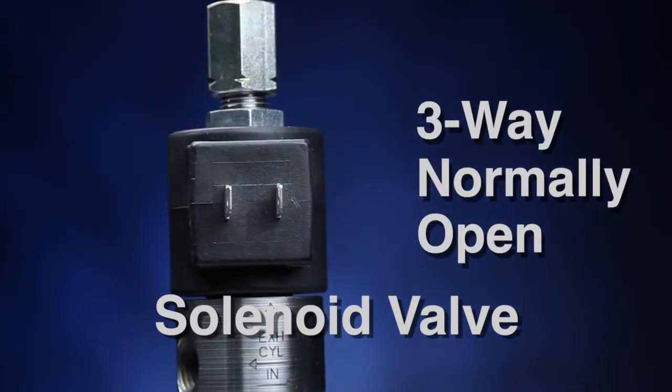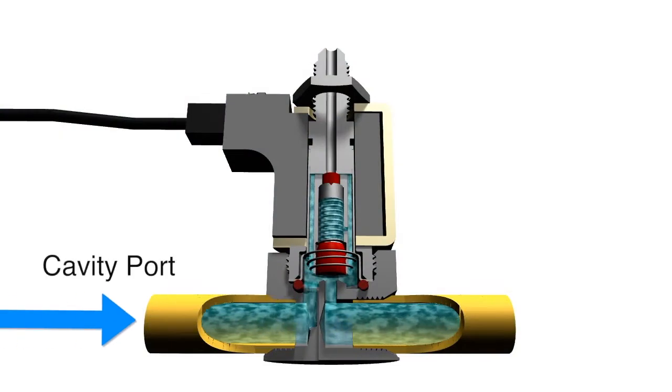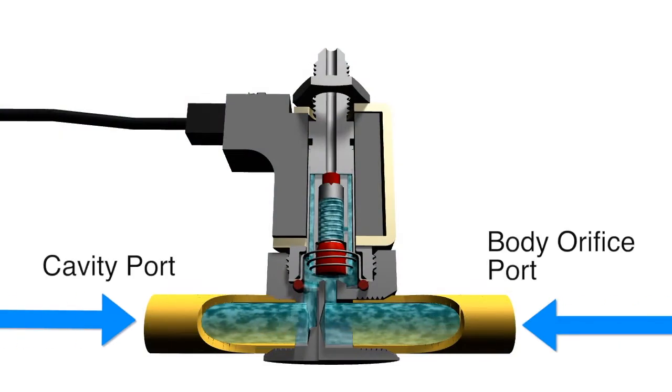A three-way normally open solenoid valve has three pipe connections: the cavity port, the body orifice port, and the stop port.